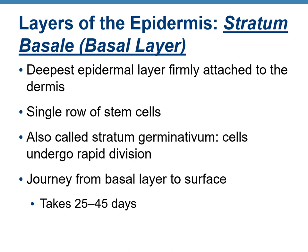The stratum basale is the basal layer — the deepest epidermal layer — consisting of one row of metabolically active stem cells that divide by mitosis and synthesize proteins, primarily keratin. This layer is also called the stratum germinativum, meaning cells that undergo rapid division. The journey from the basal layer to the surface of the skin, all the way to the stratum corneum, takes about 25–45 days, or roughly one month.